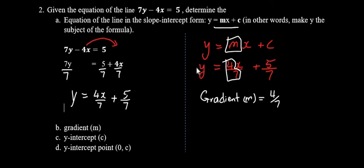And our y-intercept is the c value. So identifying our c value, it is 5 over 7, the constant.